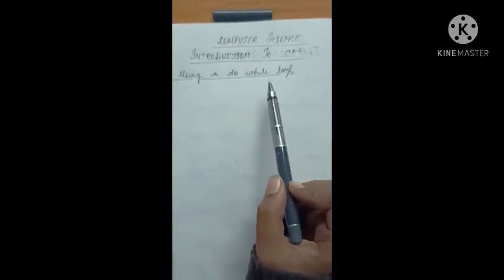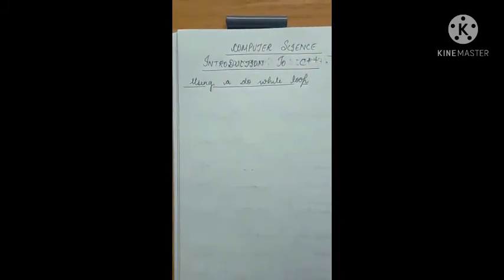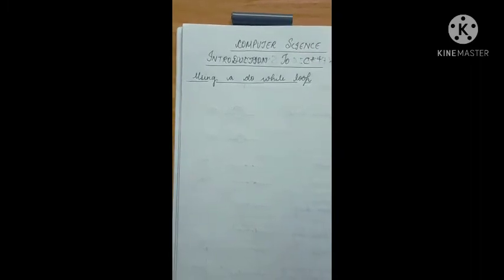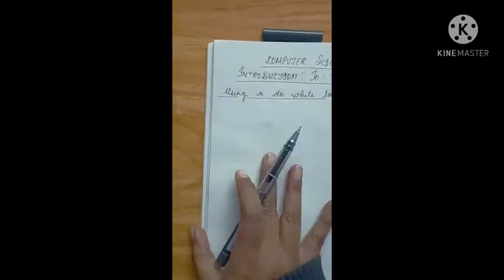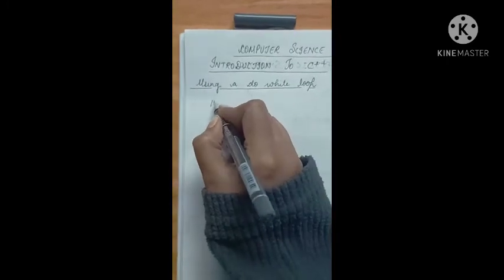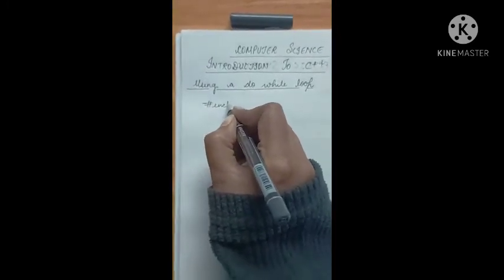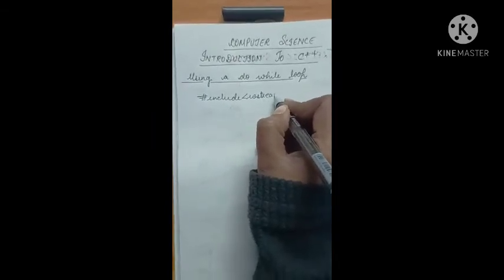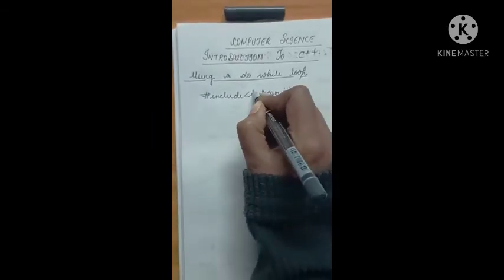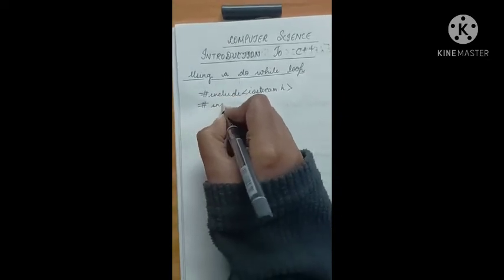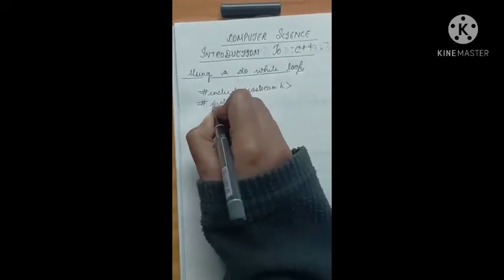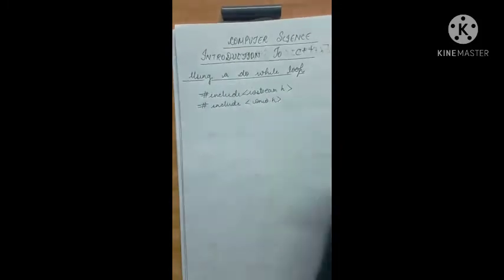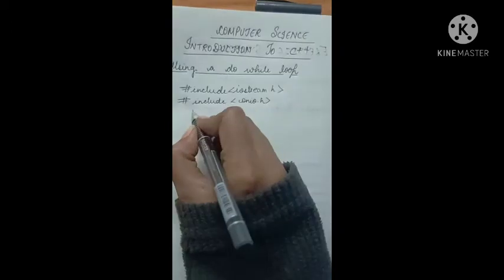I'm going to write a program using a do-while loop to print the table of a number. First we give the header file: hash include iostream.h, then hash include conio.h.